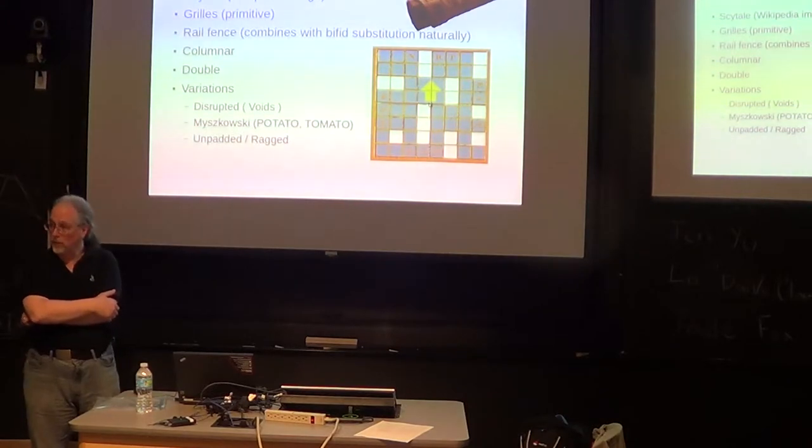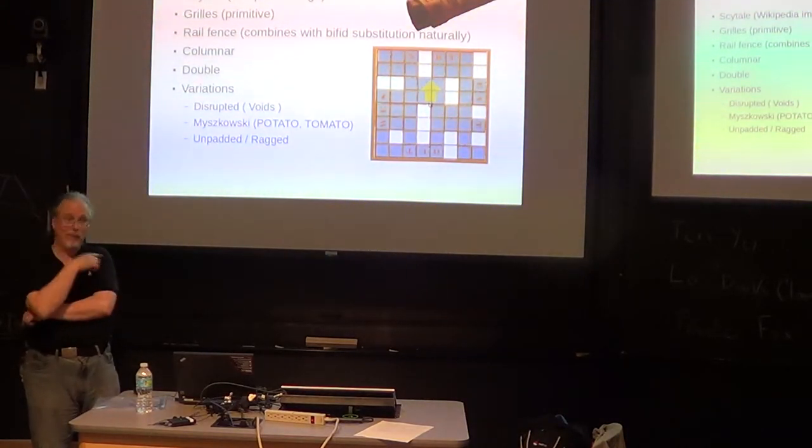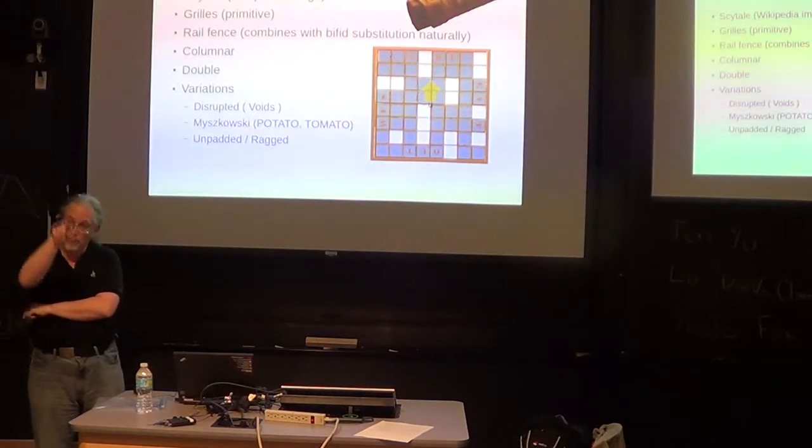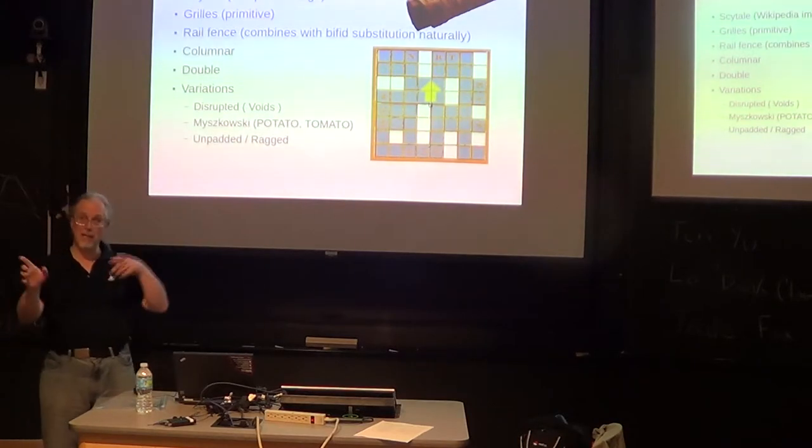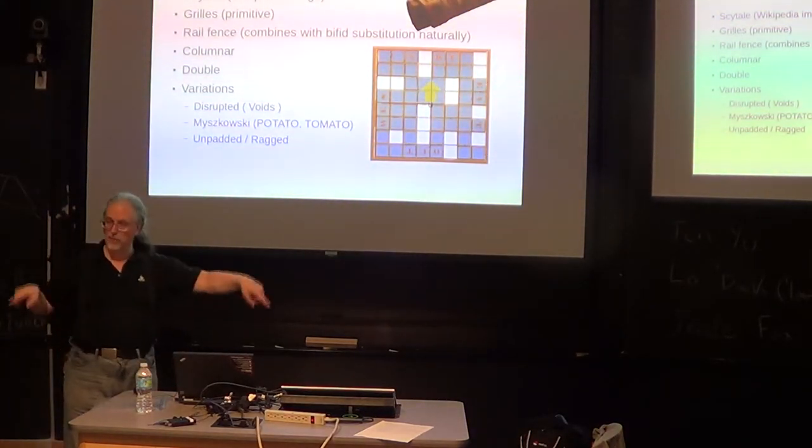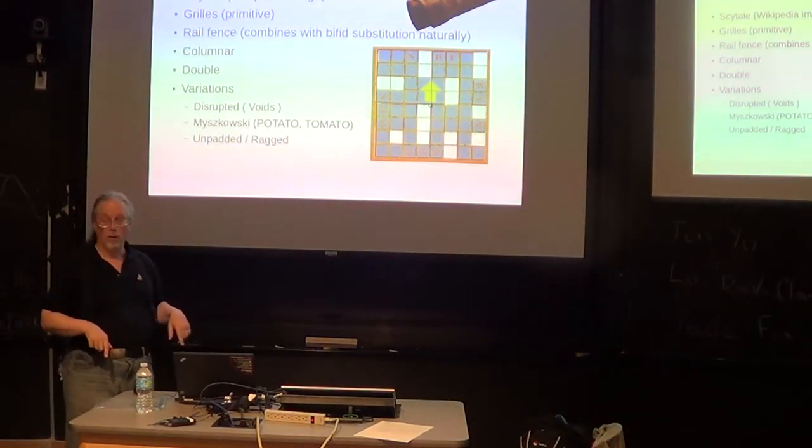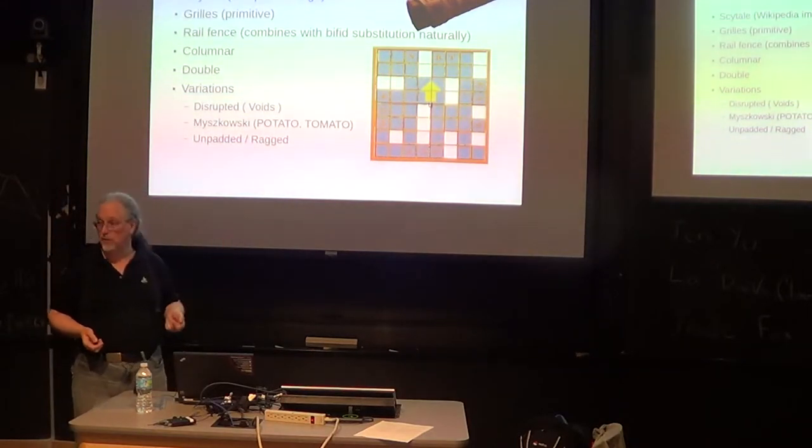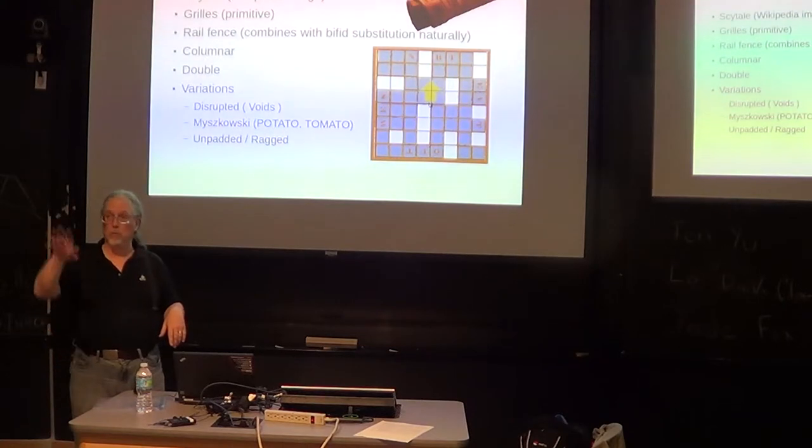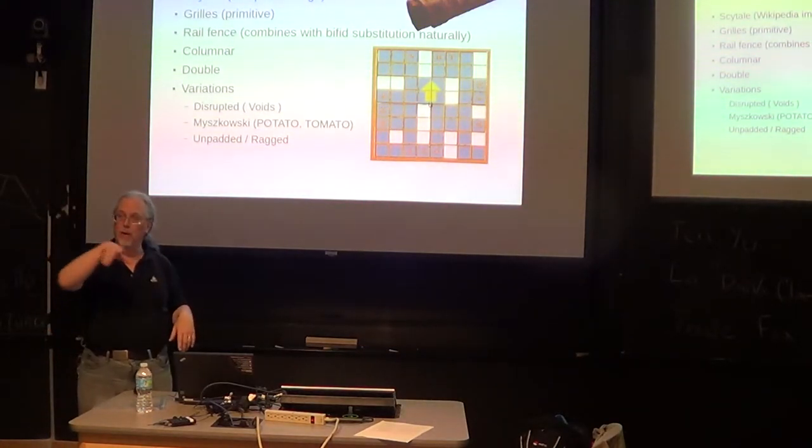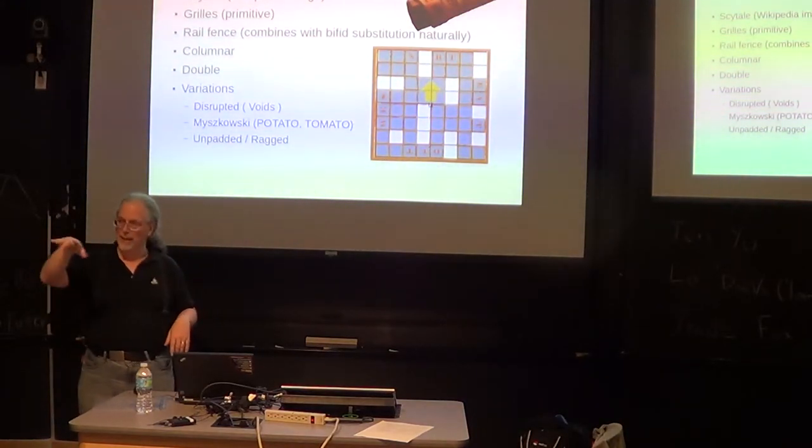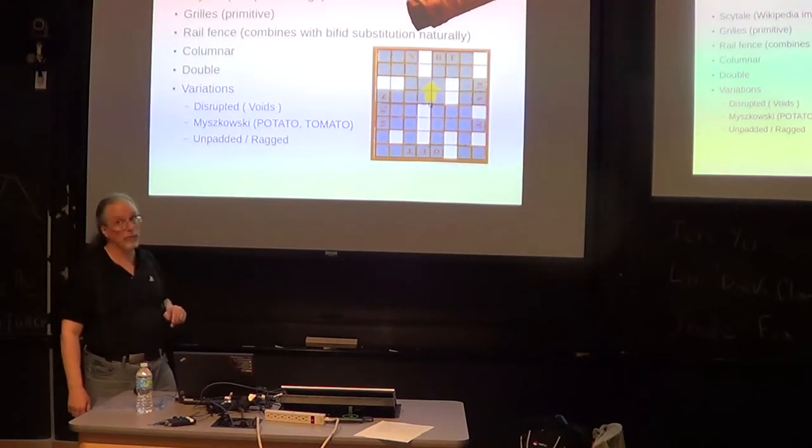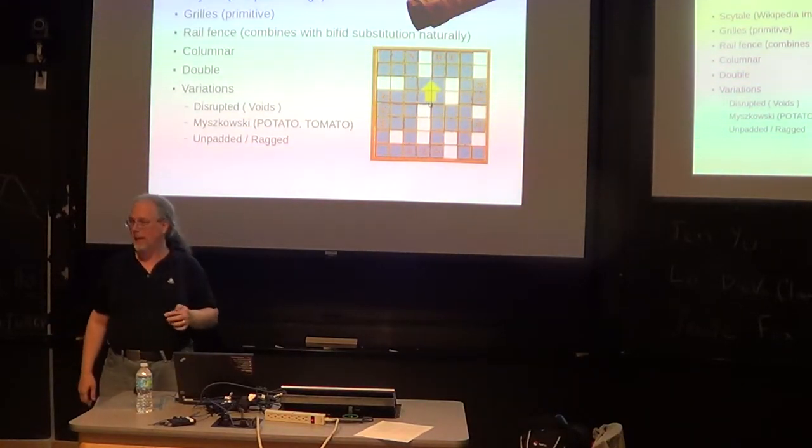So the classic transposition is columnar where you write the message in rows and take it out in columns and maybe you do something less obvious than take out the first column, second column, third column, fourth column. You probably want to take them out in a different order. So you have how big is the rectangle, and which columns to read out. Double transposition is you do this twice. You put them in the columns, put them in the rows, take them out in the columns in some order, then put it into a different size rectangle in rows and take out different columns again. That is tough to break. Doable if you have a lot of messages in the same key, but it's tough to break.